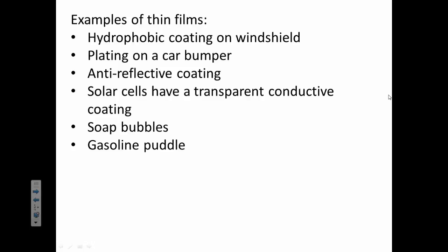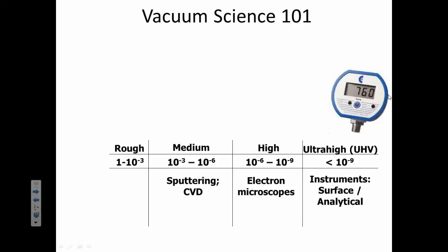Some examples of thin films would be a hydrophobic coating on a windshield, a plating on a car bumper, an anti-reflective coating, a lot of people have those on their glasses, solar cells, soap bubbles are thin films, especially when you see all those beautiful colors in them, and a gasoline puddle also has that thin film.